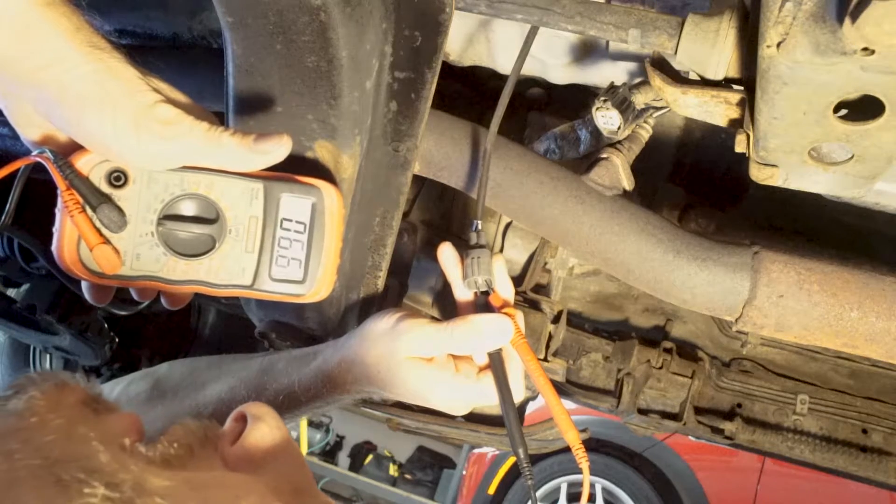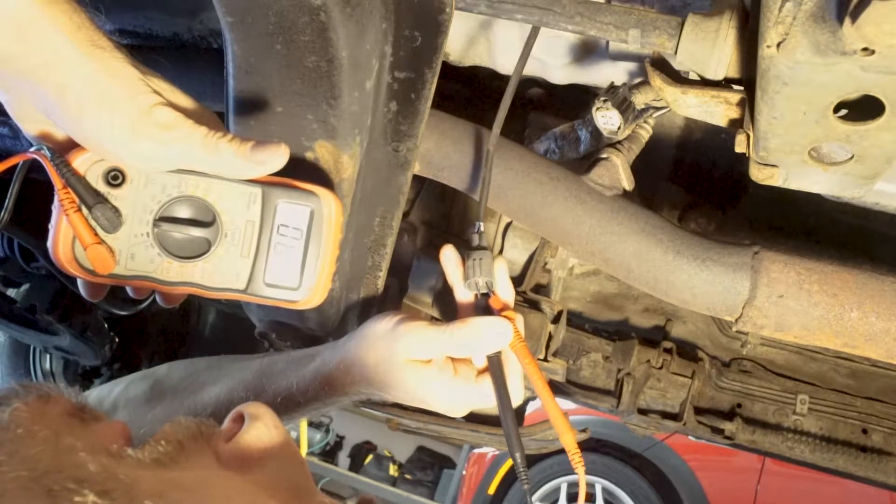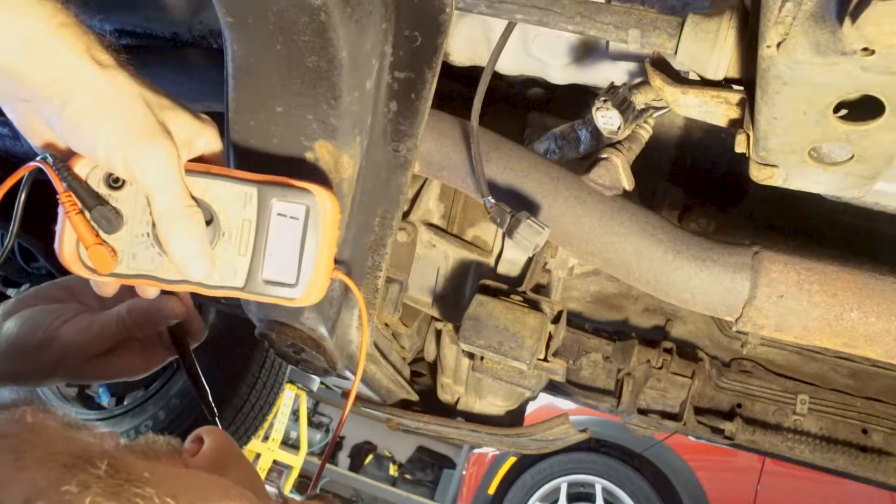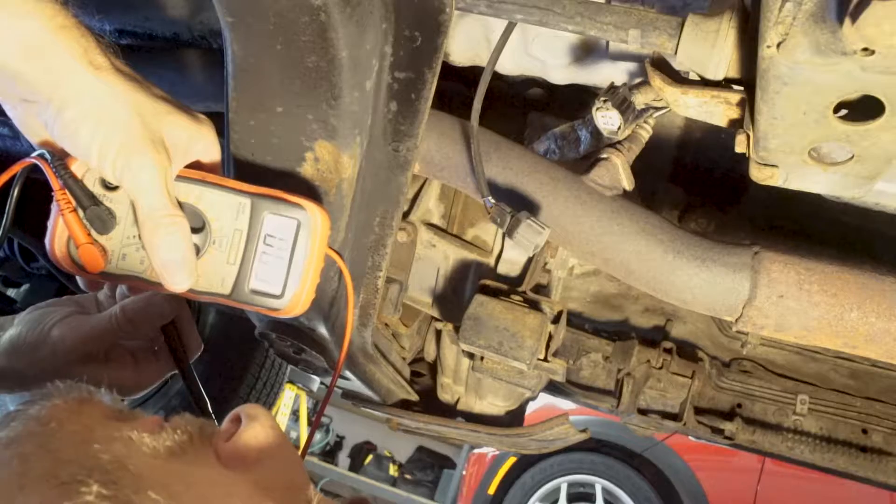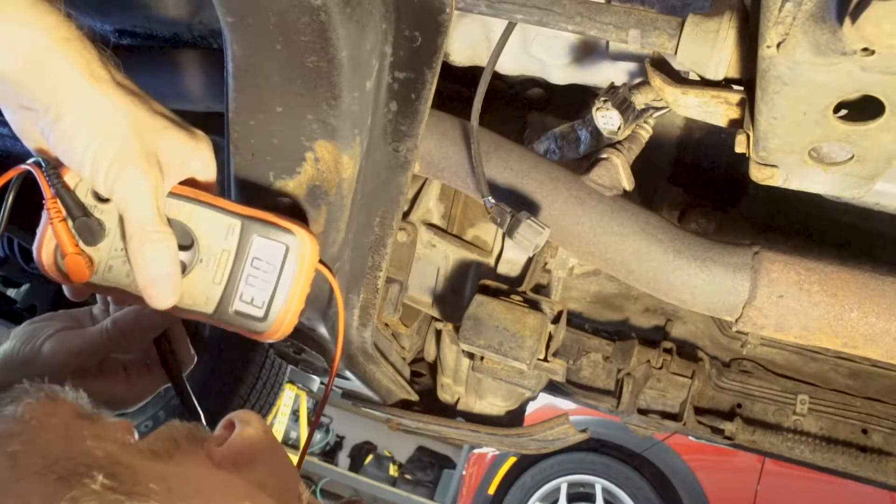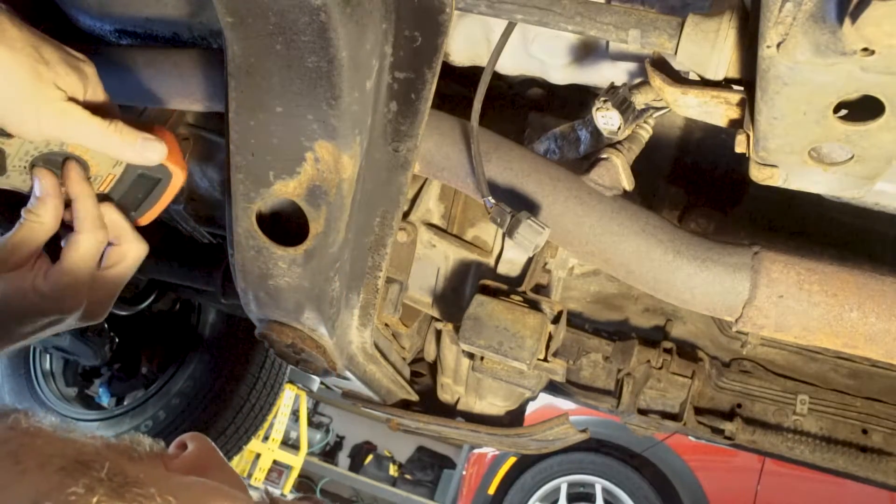6.6, 6.5, and the internal resistance of my meter, 0.3 we'll call it. So what are we getting? About 6.2. Looks good to me.